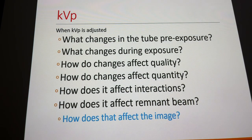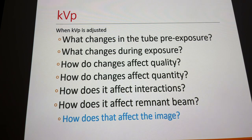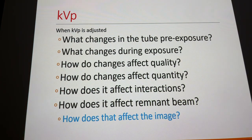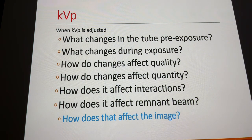Pre-exposure, there's not a lot of voltage inside the X-ray tube until you depress the exposure button. At that point, the potential difference between cathode and anode increases, accelerating electrons across the tube — the higher the KVP, the faster they move. When they hit the anode, we get interactions: we create X-rays through bremsstrahlung, some characteristic X-rays if KVP is high enough, but mainly heat and a small amount of electrons.